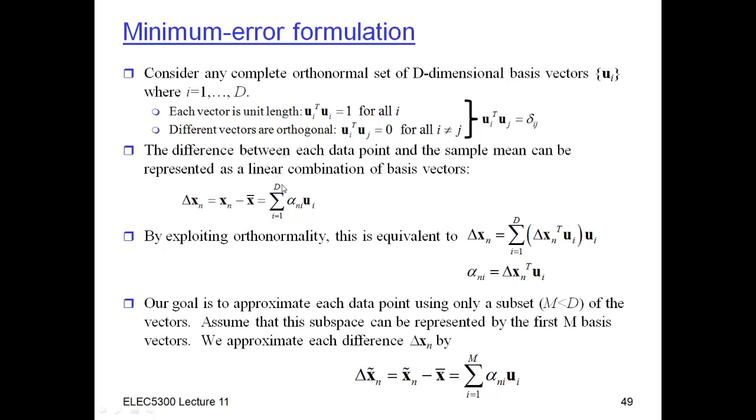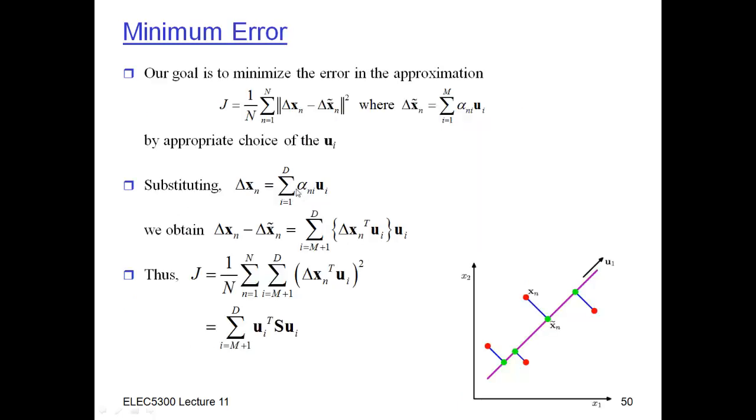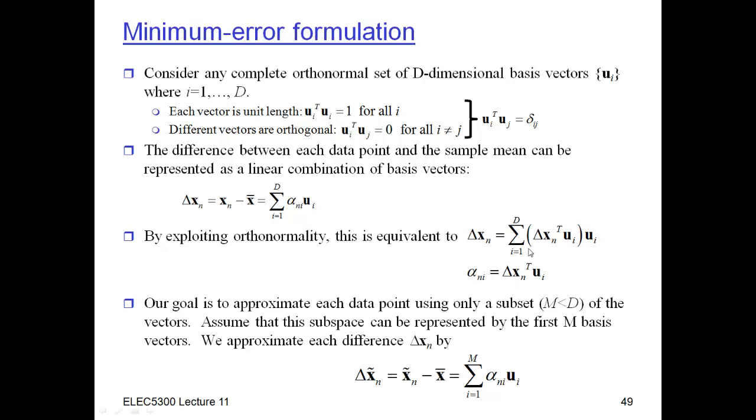Now, if we use the fact that things are all orthonormal, then we know that the alpha NIs are just the projection of the data vector, or the difference between the data vector and its mean, onto UI. So that's shown here, and so if we just replace the alpha NI by the definition here, in this equation we get this equation right here.